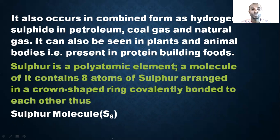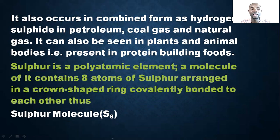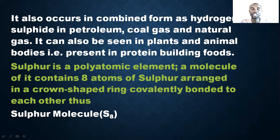Another important fact is that sulfur is a polyatomic element. A molecule of sulfur contains eight atoms of sulfur arranged in a crown-shaped ring, covalently bonded to each other. That is why the molecule of sulfur is written as S₈.